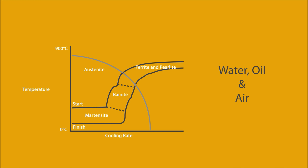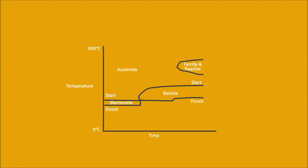Some CCT diagrams also show the hardness achieved from each structure. Time-temperature transformation diagrams show how long it would take for a structure to be achieved by holding at a given temperature. This diagram allows you to plot varying cooling rates and show the structure that would be achieved.